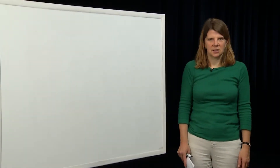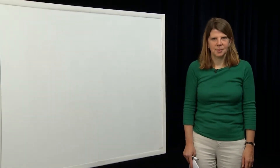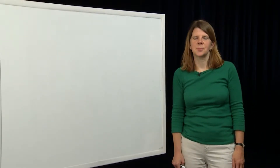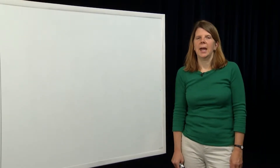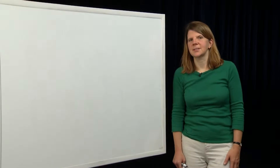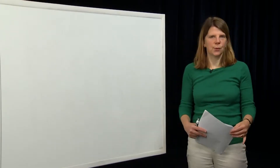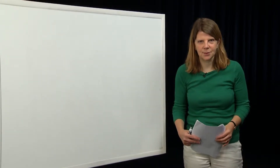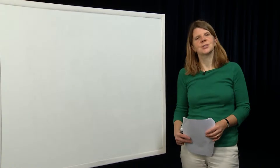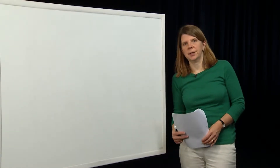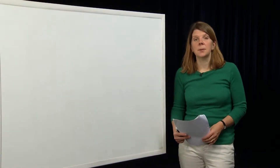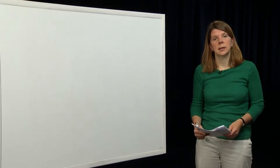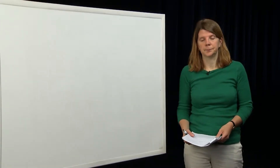Hi, everyone. My name is Claire Tomlin. I'm a professor of electrical engineering and computer sciences at Berkeley. This is the 10th module in a series recording to support the course EECS 221A, which is linear system theory at Berkeley. The topic of today's module is orthogonality and adjoints.